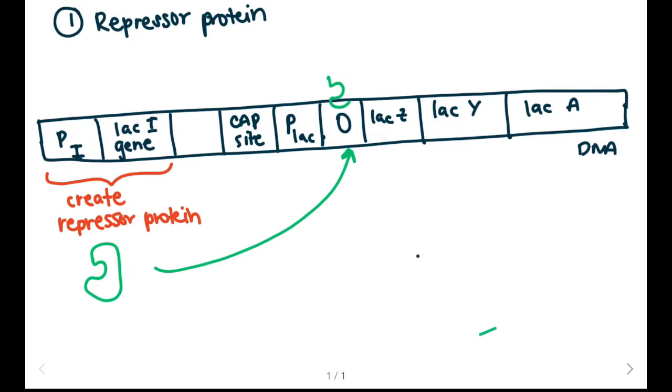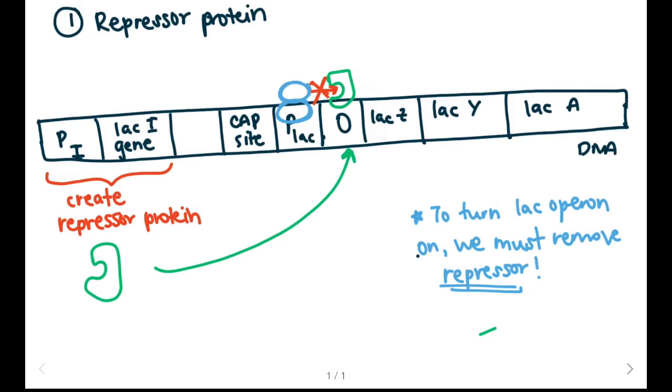When the repressor protein binds to the operator, RNA polymerase can still bind to the promoter but it will be unable to move forward because the repressor is blocking it. As a result transcription will not occur, but we can turn the lac operon on if we remove the repressor protein from the operator so that RNA polymerase can move forward.